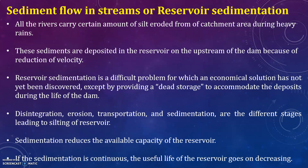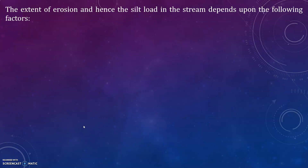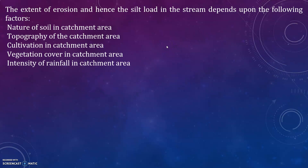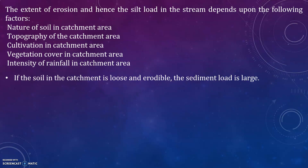Sedimentation reduces the available capacity of the reservoir. If sedimentation is continuous, the useful life of the reservoir goes on decreasing. The extent of erosion and hence the silt load in the stream depends upon the following factors: the nature of soil in the catchment area, topography of the catchment area, cultivation in the catchment area, vegetation covering the catchment area, and intensity of rainfall in the catchment.